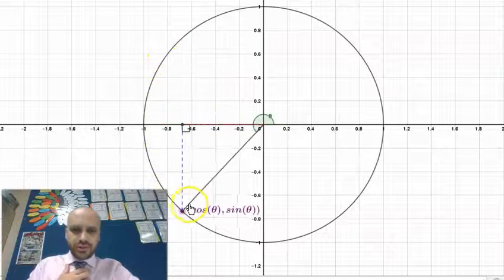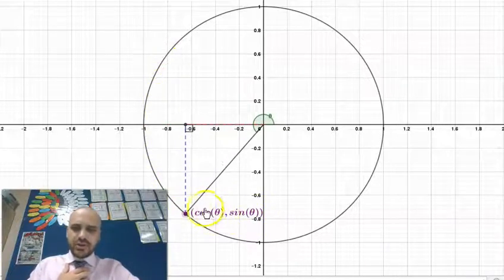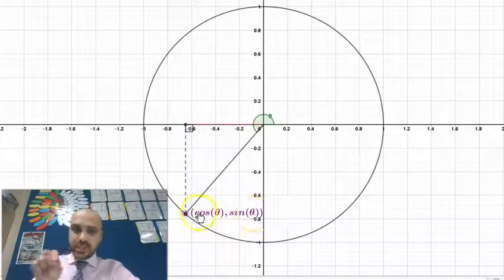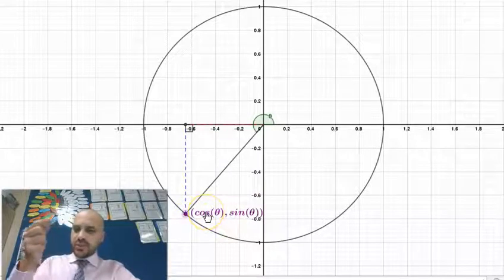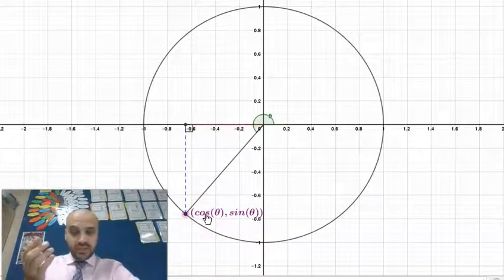When we move into quadrant 3, sine theta and cos theta are both going to be negative, which means that when we divide one by the other, which is tan theta, it's going to be positive.